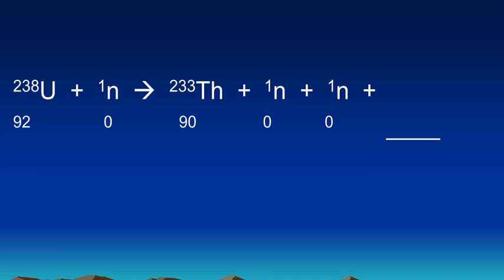And so we have thorium-233 and then we have two neutrons, and so the question is what is the other product? Well it's the same process. Numbers on the left have to add up to the numbers on the right. So on the top on the left, looks like they add up to 239. 238 plus 1 gets us 239. So that means that the numbers on the right have to add up to 239 as well. But when I add up those numbers there, 233 plus 1 plus 1, that's 235.